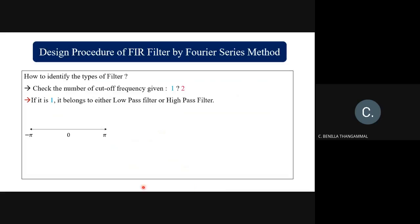The range from −π to +π is segmented into two parts: 0 to π and 0 to −π. The cutoff frequency ωc is placed between 0 to π, and −ωc is placed between 0 to −π. If Hd(e^(jω)) is defined for the range −ωc to +ωc, it is a low pass filter. If Hd(e^(jω)) is defined for −π to −ωc and ωc to π, it is a high pass filter.